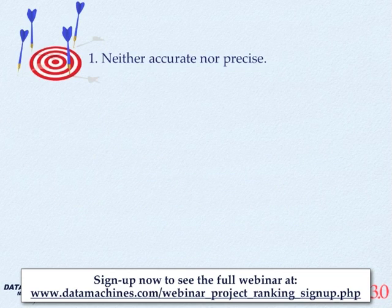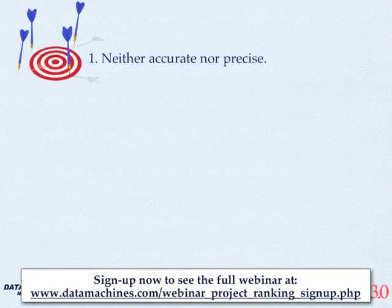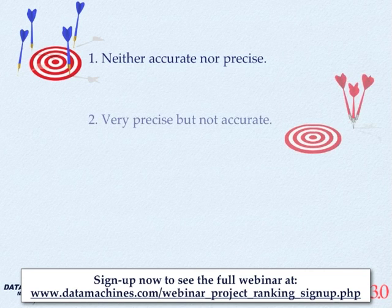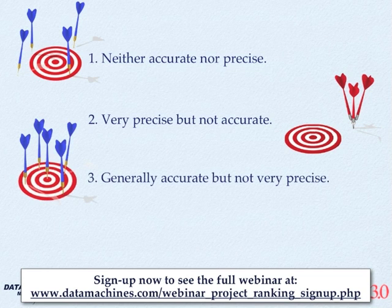The other question that needs to be asked is: what is the precision or uncertainty around the data? Let me use a quick illustration comparing four people throwing darts at a bullseye. The first illustration shows a situation where the person is neither accurate nor precise. The second shows someone extremely precise but not very accurate. The third shows someone accurate but not very precise — their uncertainty for hitting the bullseye is about the size of the entire target.